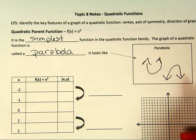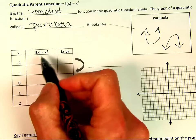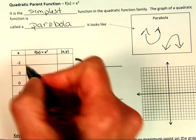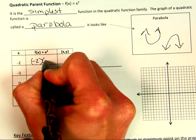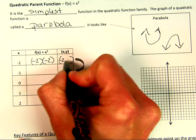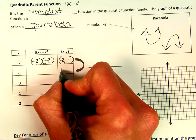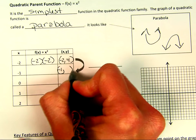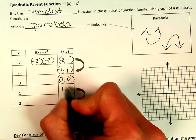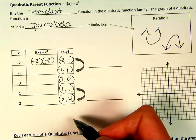We're going to make a little t-chart for the parent function. The parent function has nothing multiplied or added — it's just x squared. Negative 2 squared is negative 2 times negative 2, which is positive 4, so our point is (−2, 4). Negative 1 squared is 1, so (−1, 1). Zero squared is 0. One squared is 1. Two squared is 4.